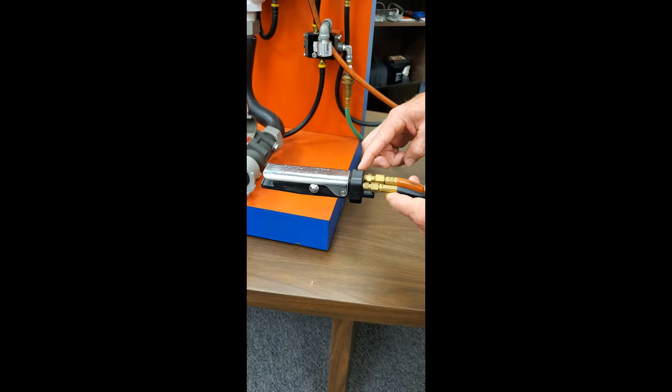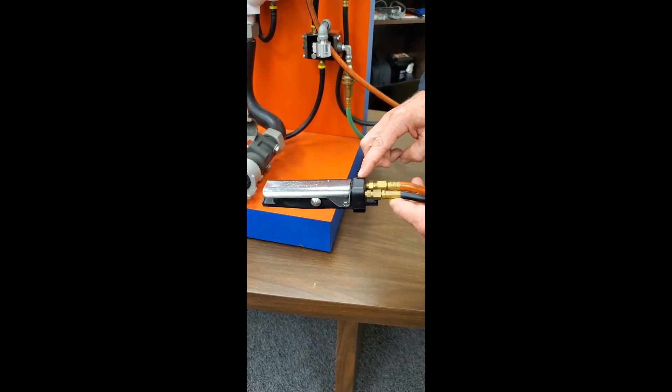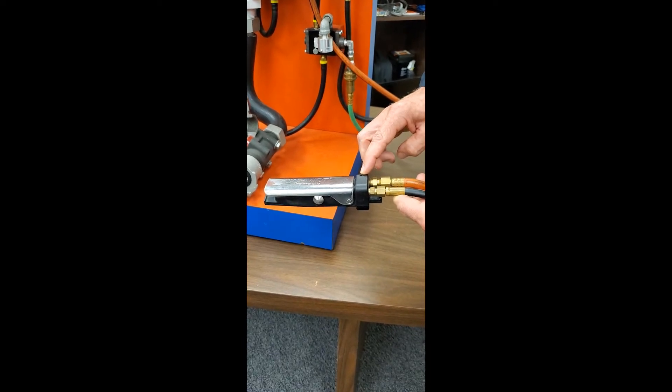On your dead man control, you have an orange line that sends air supply to this point where there's a mechanical shutoff.